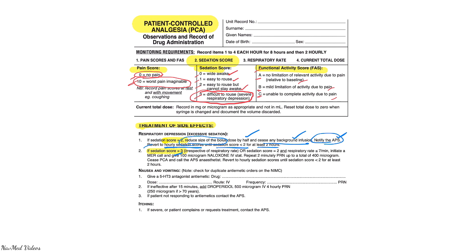If the sedation score is 3 — or if it's 2 with a respiratory rate less than 7 — we should initiate a MER call, which is a medical emergency response. We should also give 100 micrograms of naloxone, which is the antidote to opioid analgesia. This should be repeated every two minutes, up to a total dose of 400 micrograms as required. We should cease any PCA that is ongoing, call the APS, and revert to hourly sedation scoring until the score is less than 2 for at least two hours.